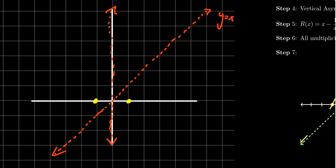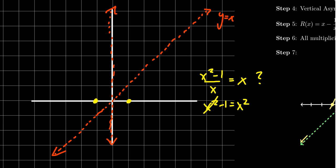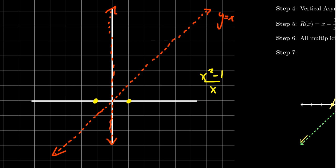One thing we haven't determined: does our function cross its oblique asymptote? Students sometimes get the misconception that because we can't cross a vertical asymptote, we can't cross any asymptote — that's not true. A rational function never crosses its vertical asymptotes because those are outside the domain. But for oblique asymptotes, we check: can (x² - 1)/x = x? Multiplying both sides by x gives x² - 1 = x², and subtracting x² gives -1 = 0, a contradiction. So there's no crossing of the oblique asymptote.